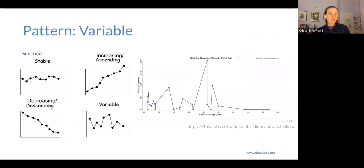Another common pattern is that it is variable, that there is no discernible direction to the data. Here we're looking at the latest fossil age and the weight of dinosaurs that were found. When we look at these two, there does not seem to be any directionality. It's not increasing, not decreasing, it's just sort of all over the place, which gives us an indication that either there is no strong relationship between the two variables we're looking at, or we don't have enough data.